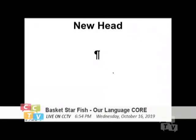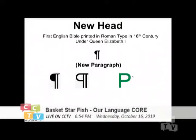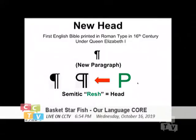Now, because of the head, I will show you one very interesting symbol that you all know. This is the symbol for a new paragraph. It first appeared in the English Bible printed in Roman type in the 16th century under Queen Elizabeth I. If you look at it carefully, it actually came from the Rash — that R sign right there — that became what you call the new paragraph. As a Semitic word, it actually means the rash, the head. This is the head of a new paragraph. What you understand as a single culture is actually a mix of all different cultures together.